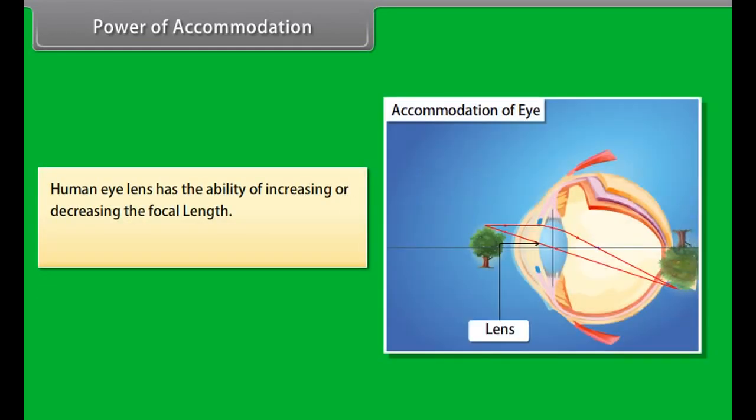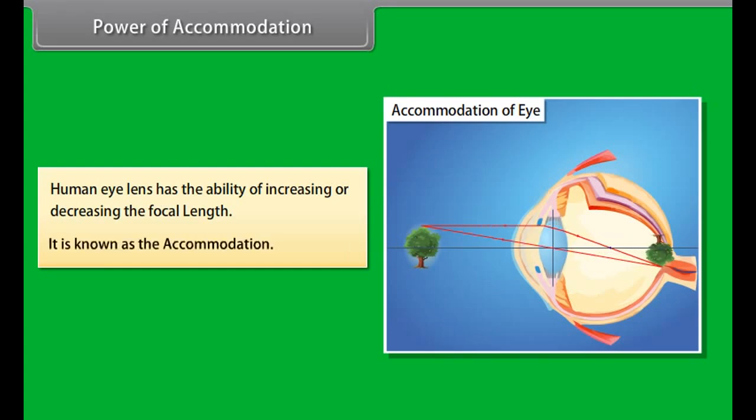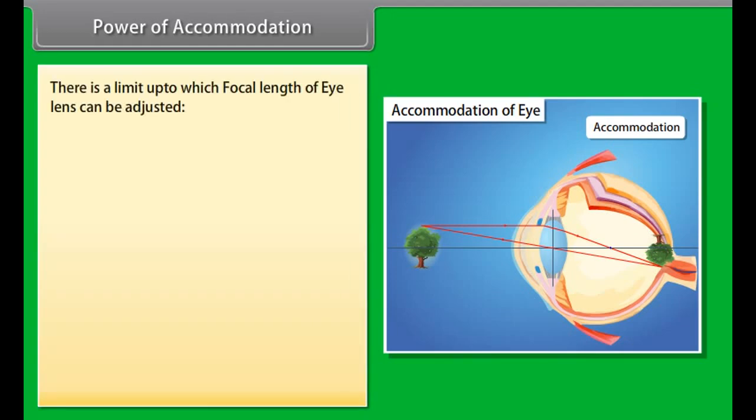Human eye lens has the ability of increasing or decreasing the focal length. It is known as accommodation. Accommodation is achieved with the help of ciliary muscles. There is a limit up to which focal length of eye lens can be adjusted.